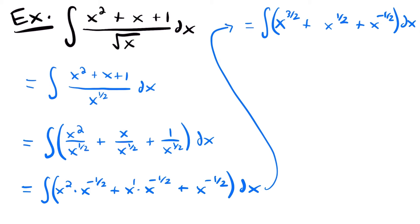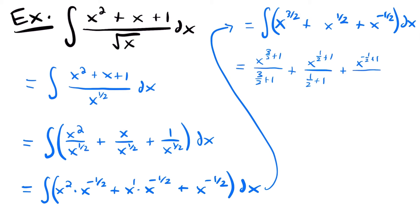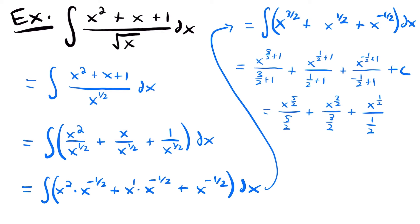Now we're ready to use the power rule for integration on each term. This is equal to x to the 3 halves plus 1 divided by 3 halves plus 1, plus x to the 1 half plus 1 divided by 1 half plus 1, plus x to the negative 1 half plus 1 divided by negative 1 half plus 1, plus c. Simplifying the exponents and denominators, we get x to the 5 halves divided by 5 halves, plus x to the 3 halves divided by 3 halves, plus x to the 1 half divided by 1 half, plus c.